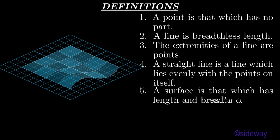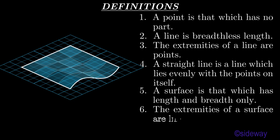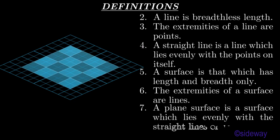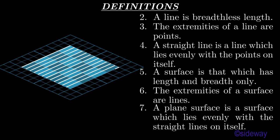A surface is a geometric element with length and breadth only. The edges of a surface are lines. A plain surface is a surface on which straight lines can be evenly constructed.